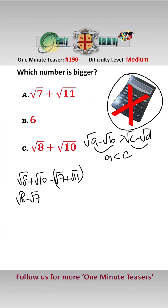We can rearrange that as root 8 minus root 7 minus root 11 minus root 10. There's one difference between 8 and 7, one difference between 11 and 10, and as 8 is less than 11, we know therefore that root 8 minus root 7 is greater than root 11 minus root 10.